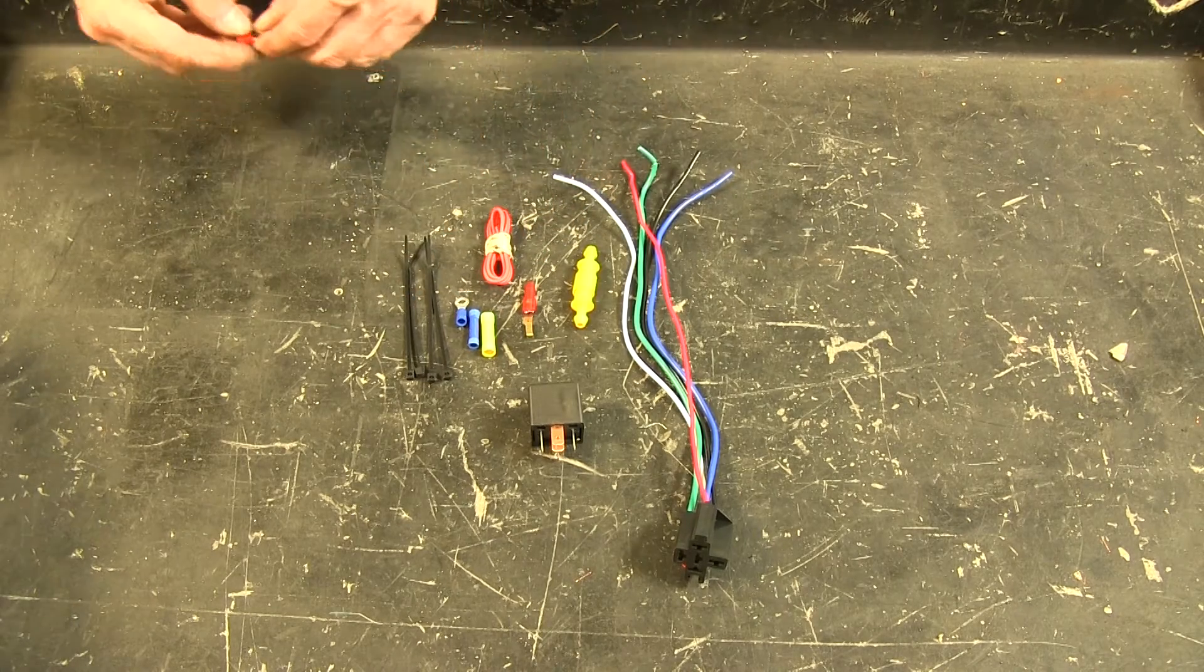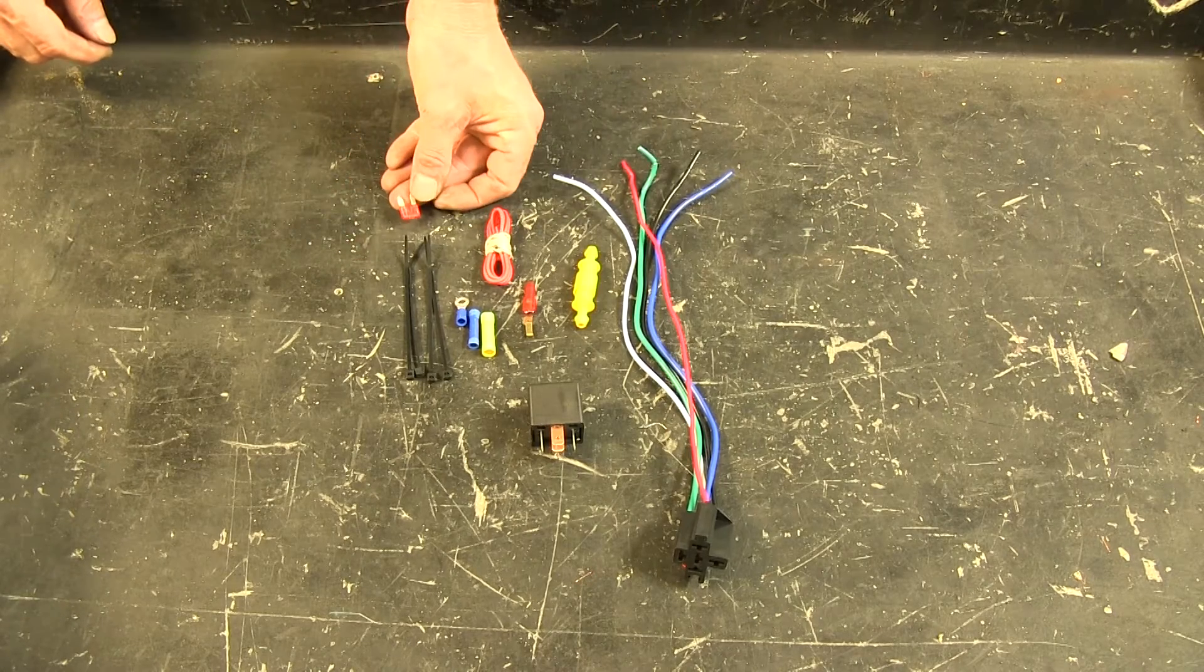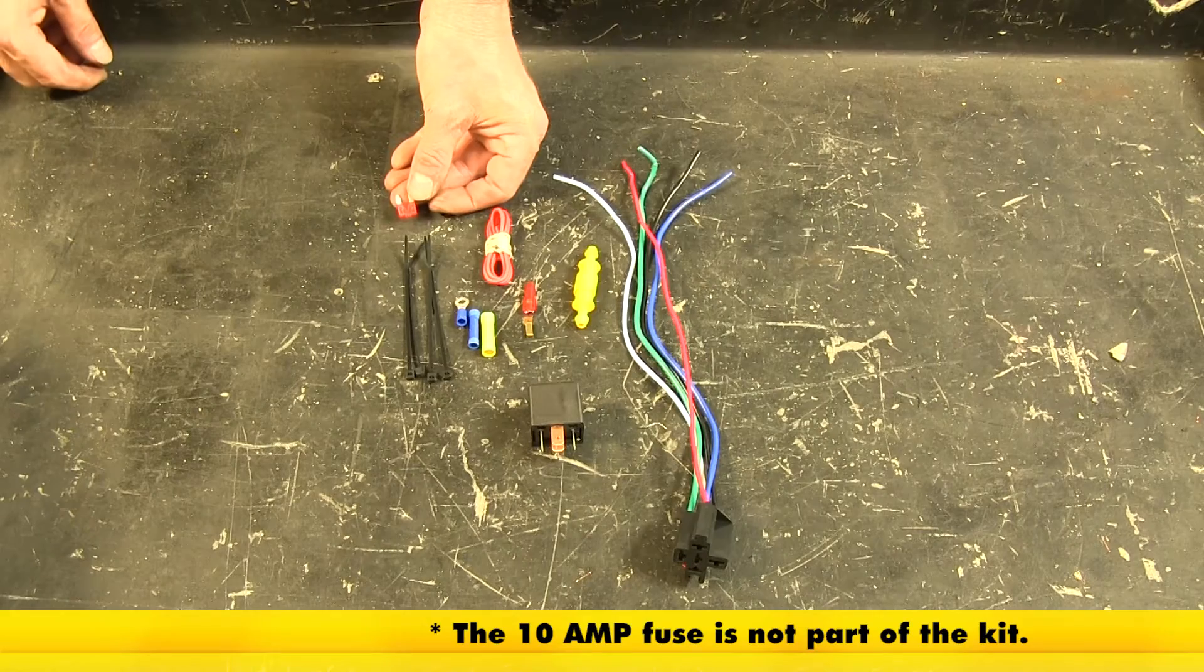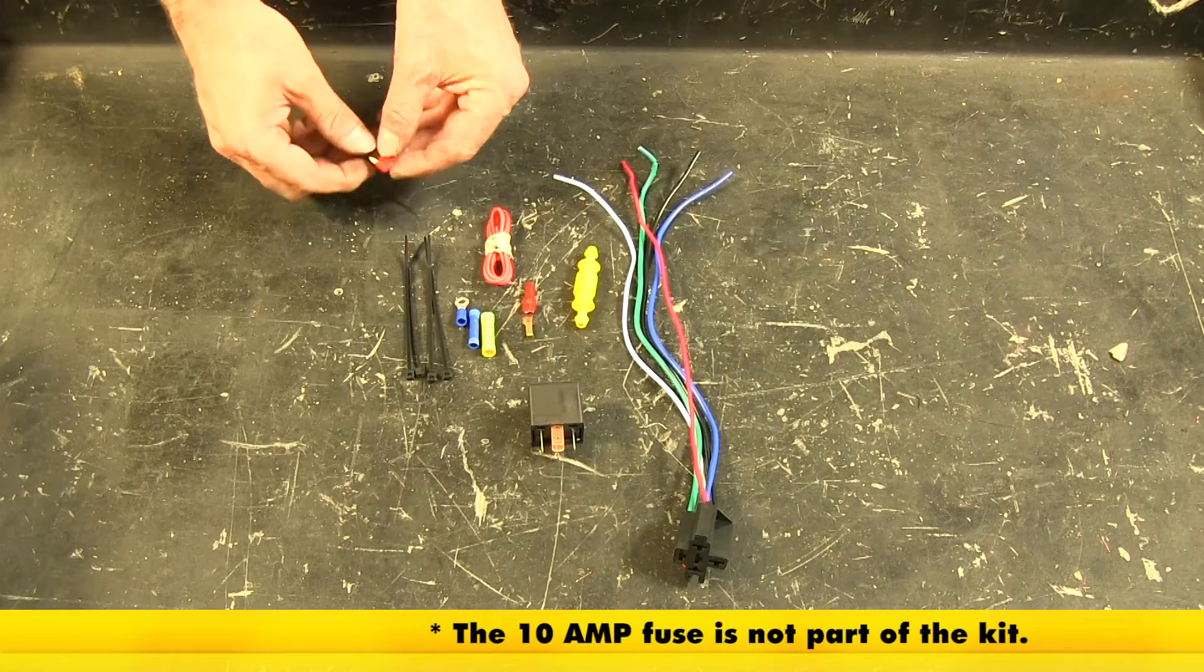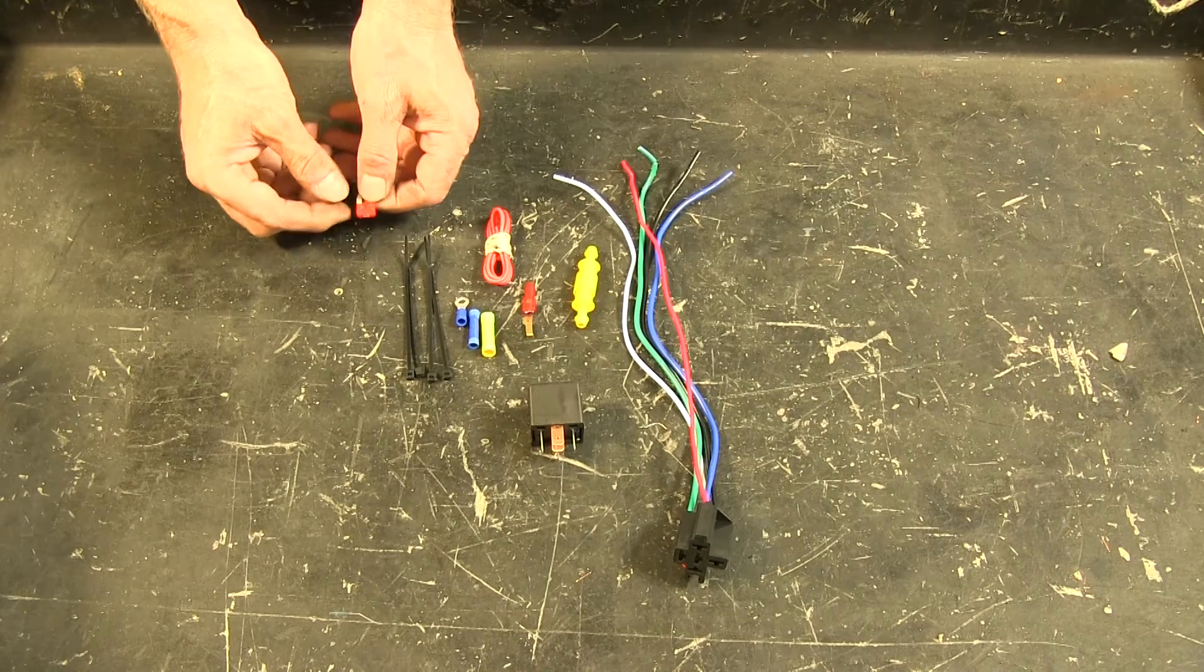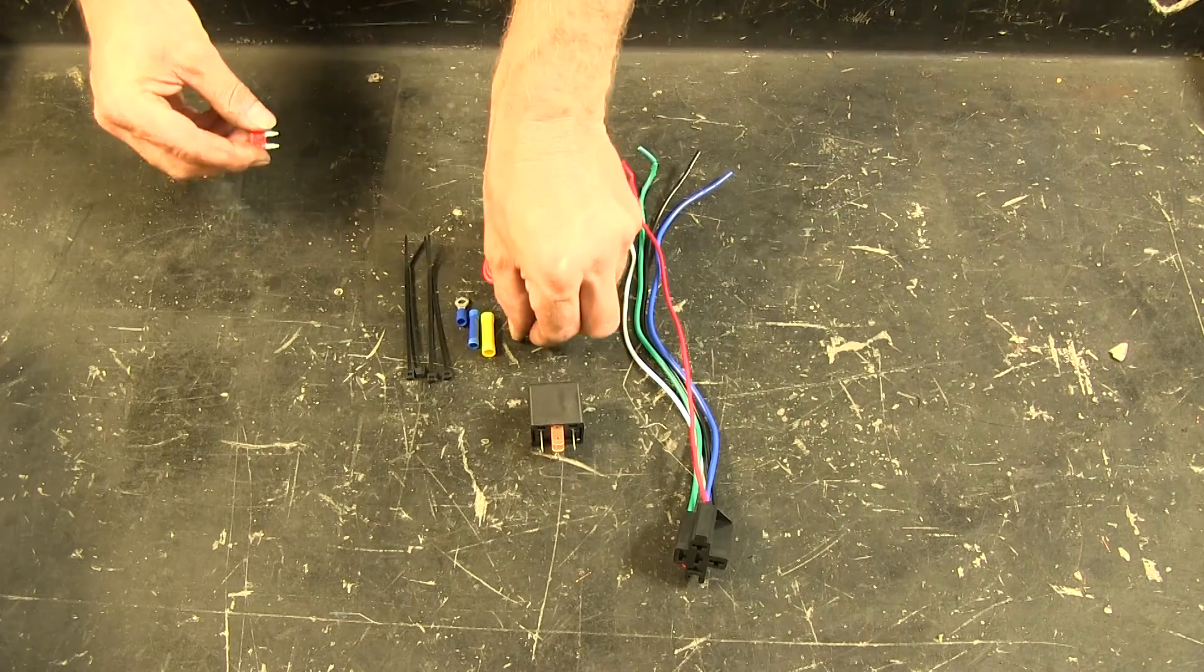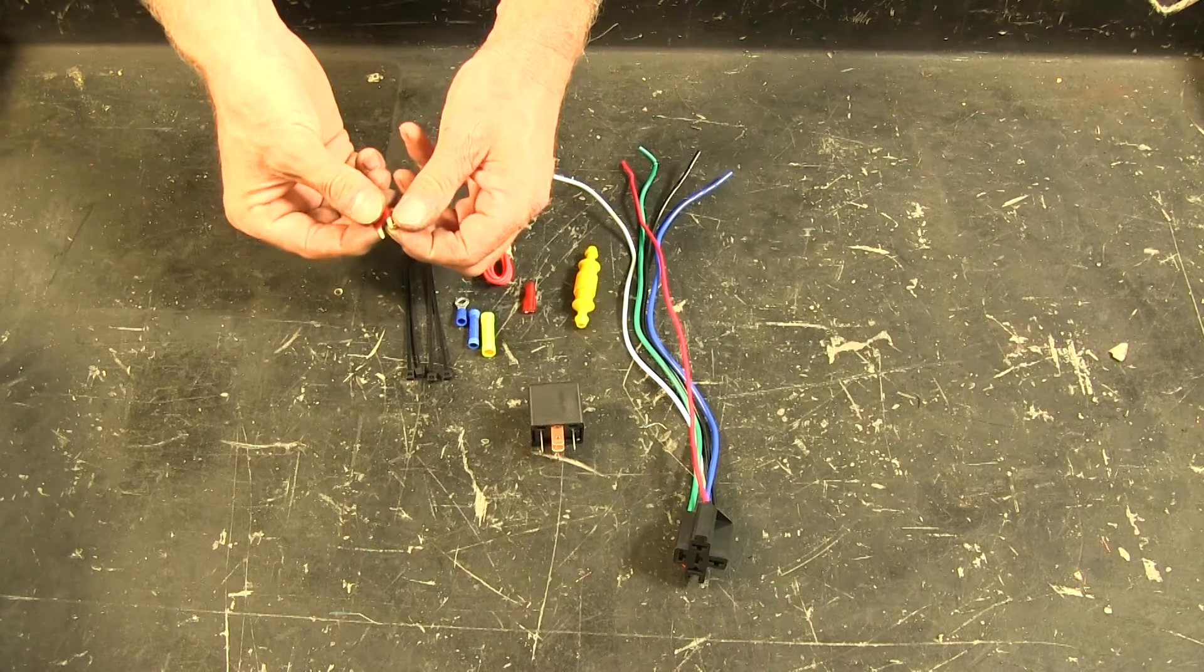Now one thing we're going to add to our install today is going to be a 10 amp fuse like this. The fuses that are already in the vehicle are flush mount style, or mini-fuse, and so the wire tap won't work, but we can replace it with a normal fuse like this. Let's go ahead and put that on together now.